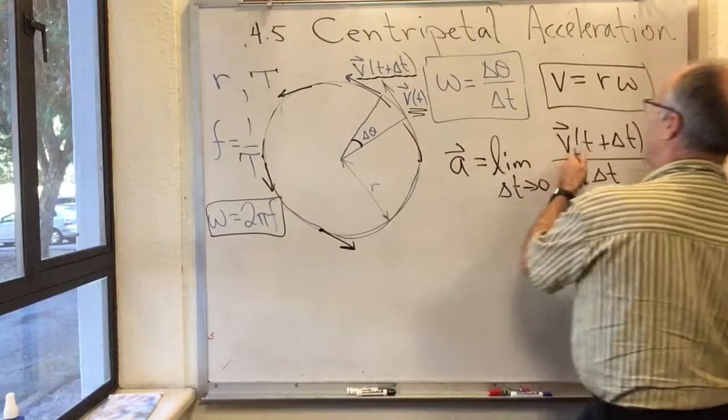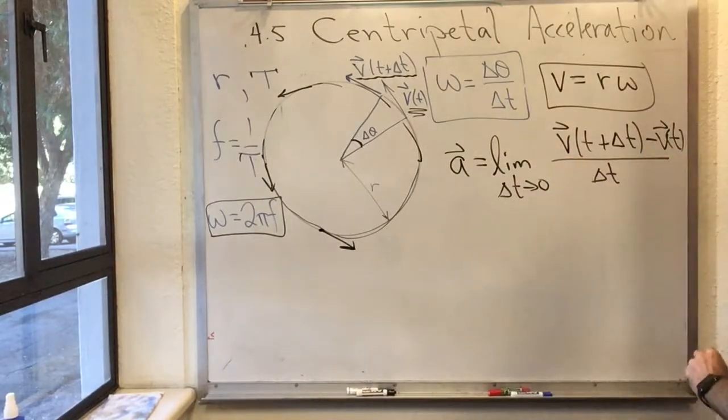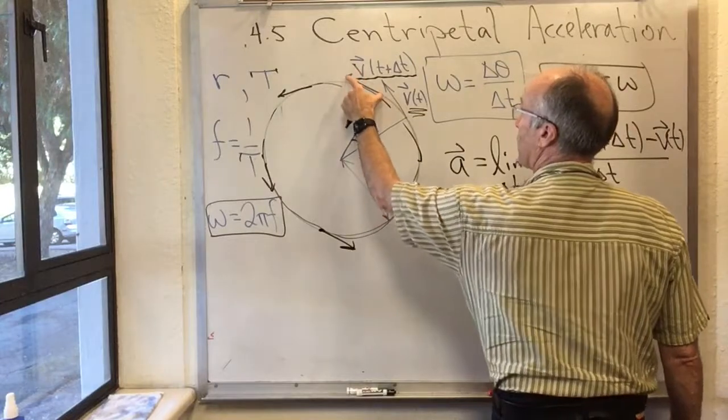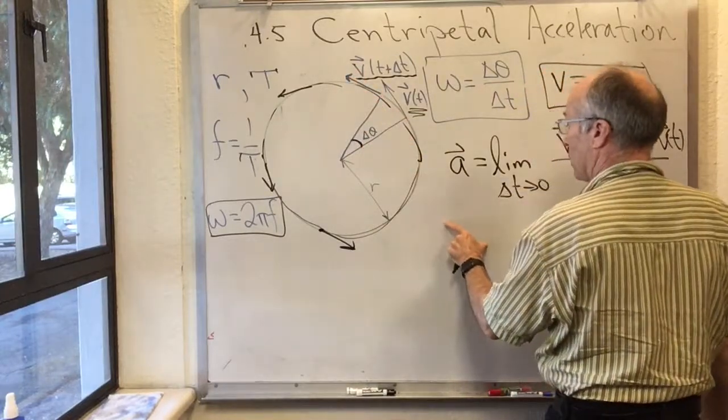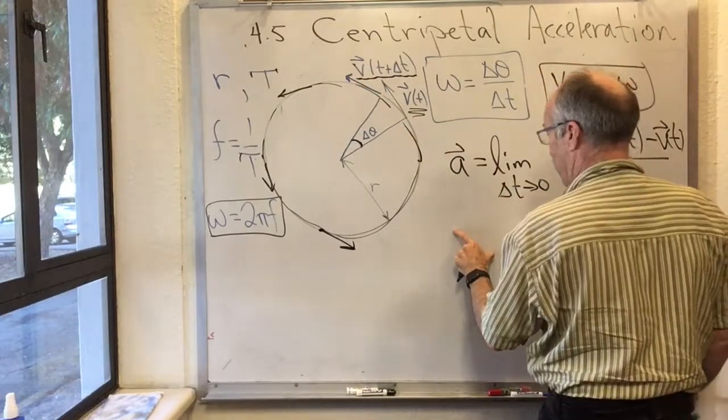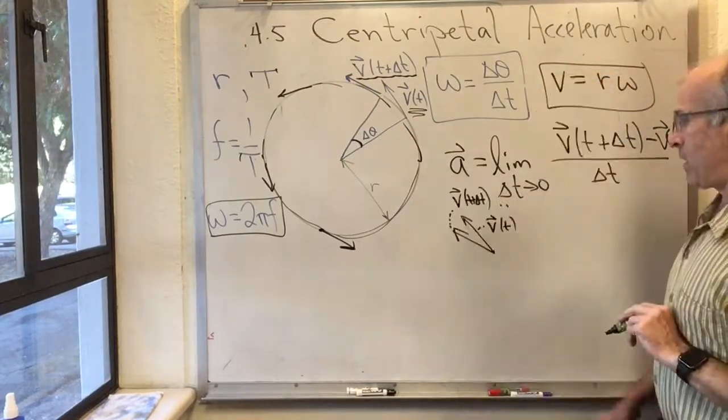Let's do v at t plus delta t minus v at t. Well, v at t plus delta t, I'm going to copy it over to here. It's about a vector about that long. I'm going to copy it over to there. There I labeled them.